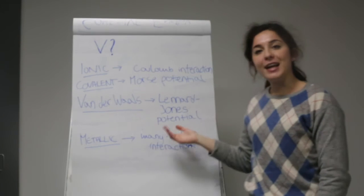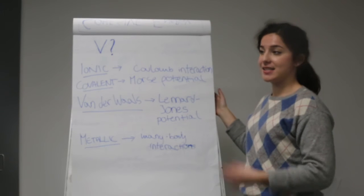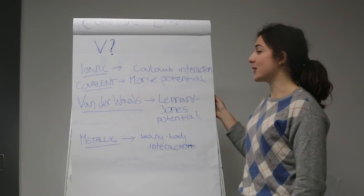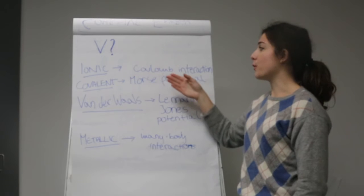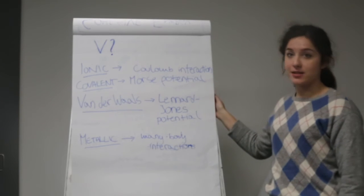To calculate the potential function at R0, we need to think about which bond is keeping the solid together. So if it's an ionic bond, we will use a Coulomb interaction formula. If it's covalent bonds, we can use a Morse potential.